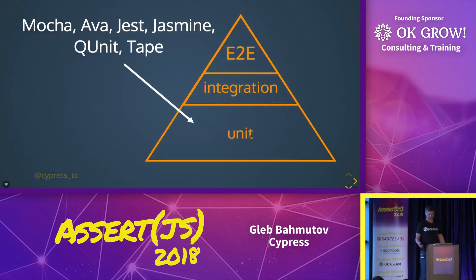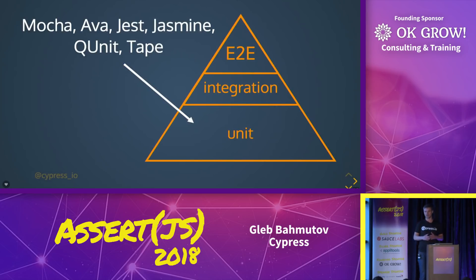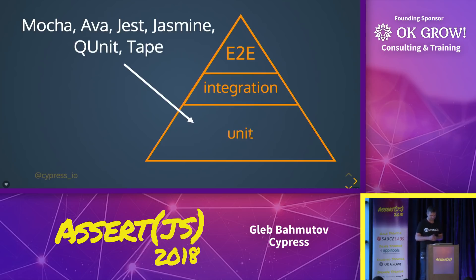Here's our pyramid — it's kind of standard. At the bottom, you have unit tests. In the middle, you have integration tests. And on the very top, you have end-to-end tests. And obviously, Chrome team did not do end-to-end tests where you used double-screen mirroring.